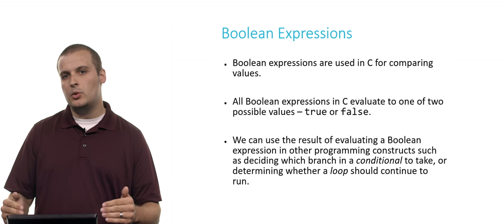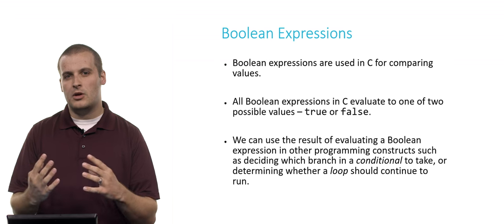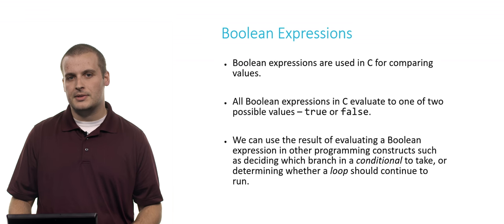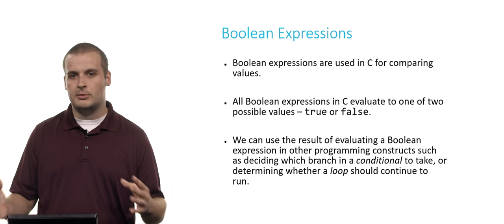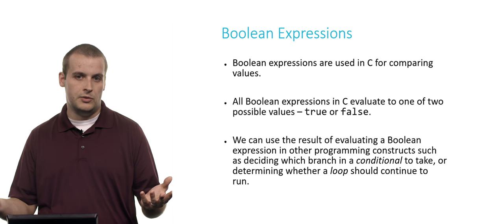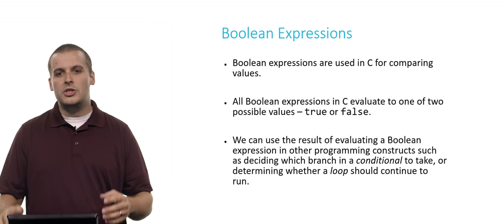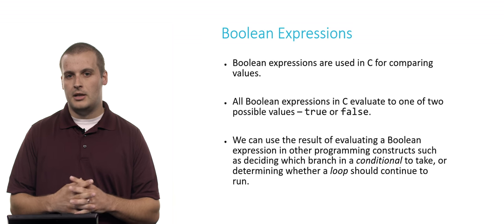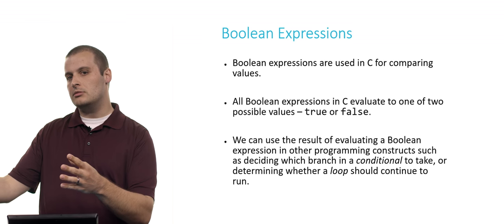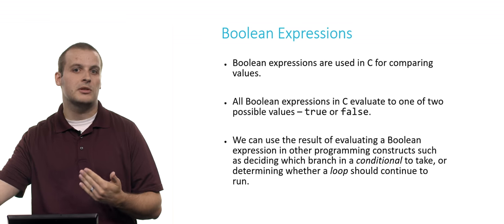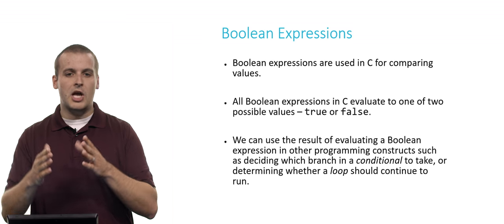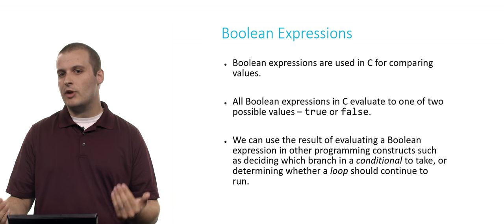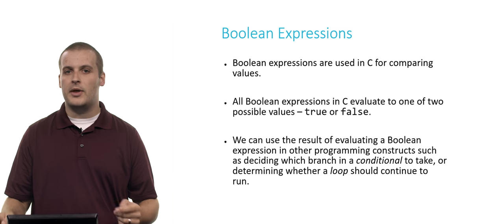So let's switch gears for a second and talk about Boolean expressions, all of which also fall into the overall category of operators. Boolean expressions, unlike arithmetic operators, are used for comparing values. All Boolean expressions in C evaluate to one of two possible values, true or false. That's the only two values a Boolean variable can take on. We can use the results of Boolean expression in a lot of ways in programming. For example, if some condition is true, maybe I'll take this branch down my code, a conditional. Or maybe, as long as this is true, I want to keep doing this over and over and over, a loop. In both cases, we're using a Boolean expression, a true or false, to decide whether or not to take a particular path.